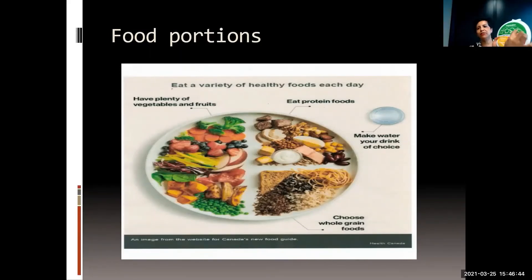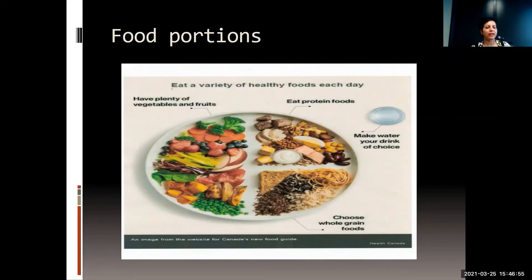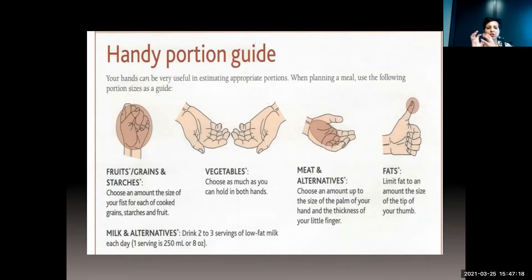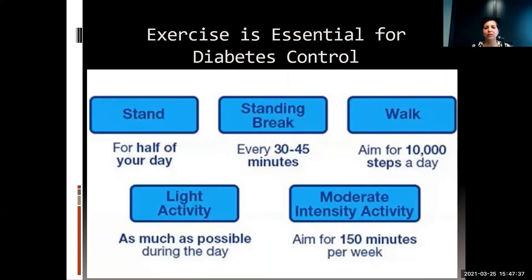We talk about the plate method: vegetables should be at least one half of your plate, meats and alternatives about the size of your palm, and grains one quarter of your plate. Fruits, grains, and starches about the size of your fist; vegetables the amount of both palms; meat and alternatives the size of your palm; and fats the size of your thumb — all based on your own hand size, not someone else's.